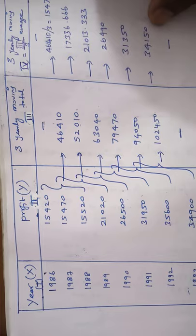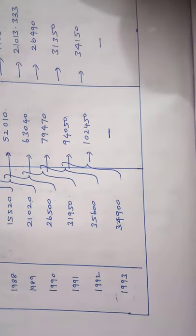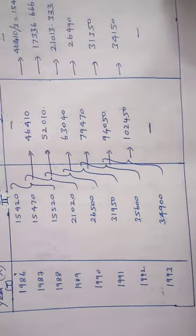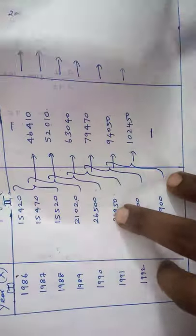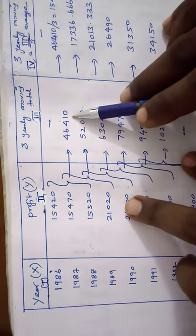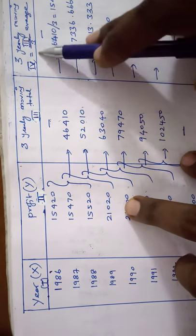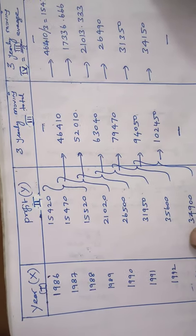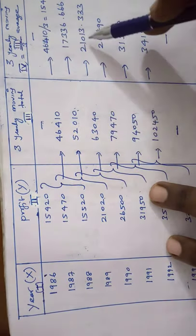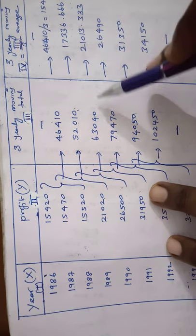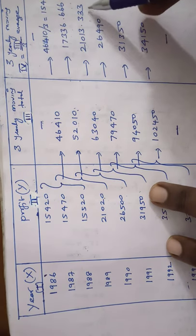Finally, we have to compute the 3-yearly moving average. The 3-yearly moving average can be taken as each and every value in the 3rd column divided by 3. This is the formula. 46,410 dividing by 3 is 15,470. Again, 52,010 dividing by 3 is 17,336.67, and 63,040 dividing by 3 is 21,013.33, and 79,470 dividing by 3 is 26,490.